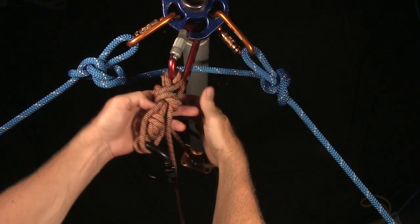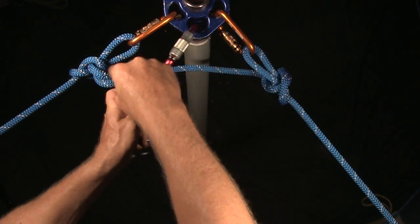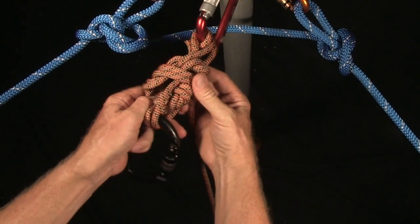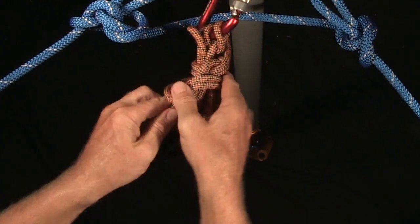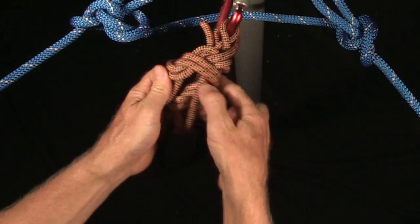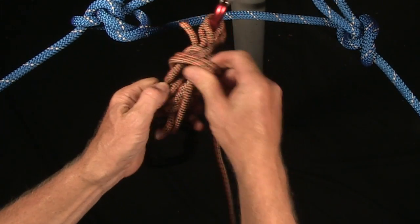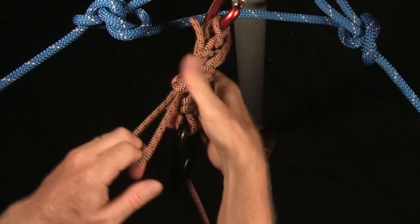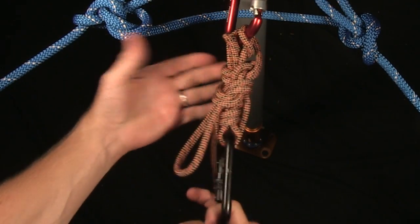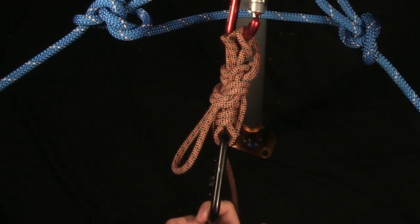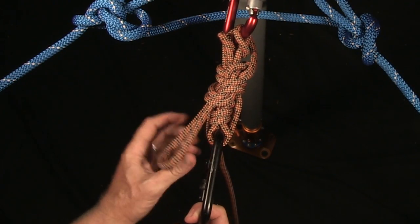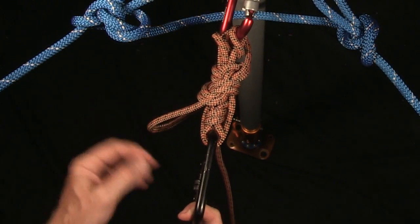So that you can come around again and tie off with an overhand. And this is the widely used method to secure the Radium Release Hitch: half hitch followed by an overhand on a bite around the body of the hitch.